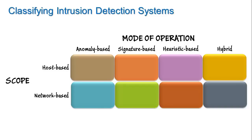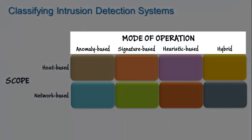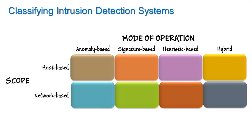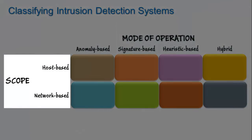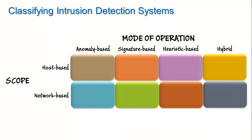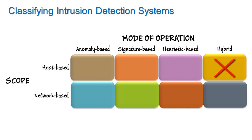The variety of intrusion detection systems can perhaps best be understood by using a 4 by 2 matrix, such as that shown in this figure. The four different modes of operation are listed along the horizontal axis, while the two different types of scope are listed along the vertical axis. With this framework in place, we can easily classify any intrusion detection system — specifically, an IDS might reside on a host and use anomaly-based, signature-based, heuristic-based, or hybrid approaches for detecting unusual activity on the host.